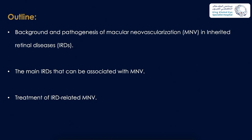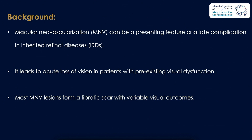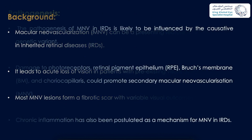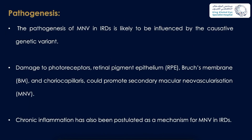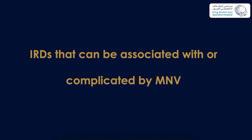Macular neovascularization can be a presenting feature or a late complication in inherited retinal diseases. It leads to acute visual loss in patients with pre-existing visual dysfunction, and most MNV regions form a fibrotic scar with variable visual outcomes. The pathogenesis is likely influenced by the causative genetic variant; however, damage to photoreceptors, RPE, Bruch's membrane, and choriocapillaris could promote secondary MNV development. Chronic inflammation has also been postulated as a mechanism.